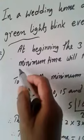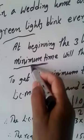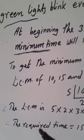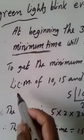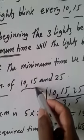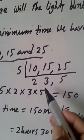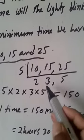What minimum time? Minimum means we have to find out LCM. We have to find out LCM of 10, 15 and 25. So, find out LCM of 10, 15, 25.